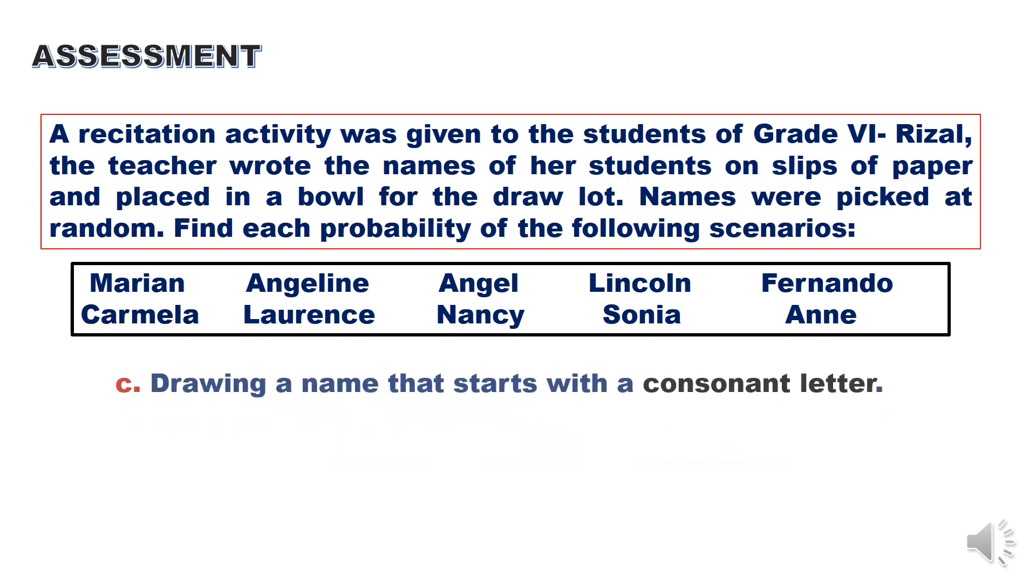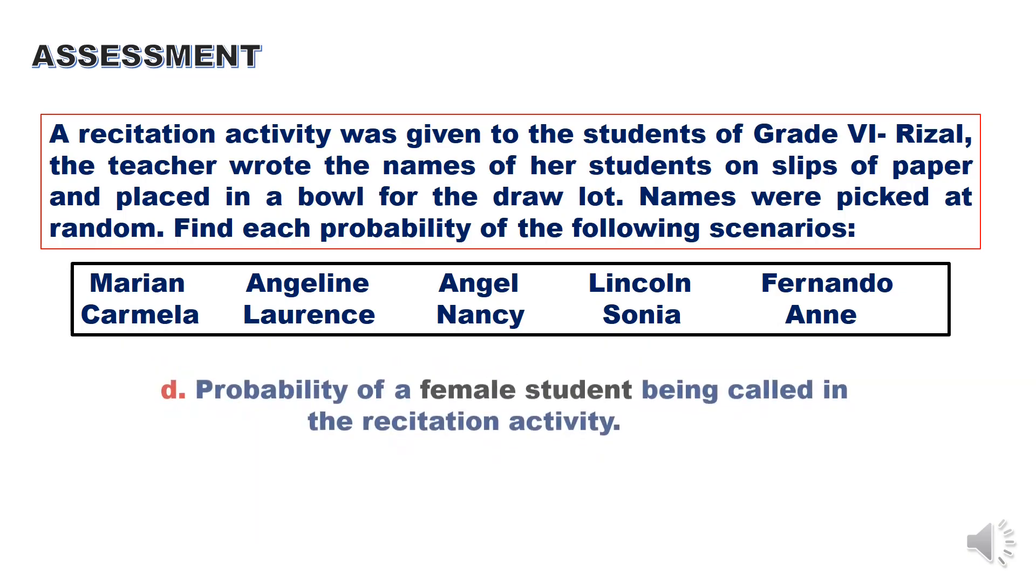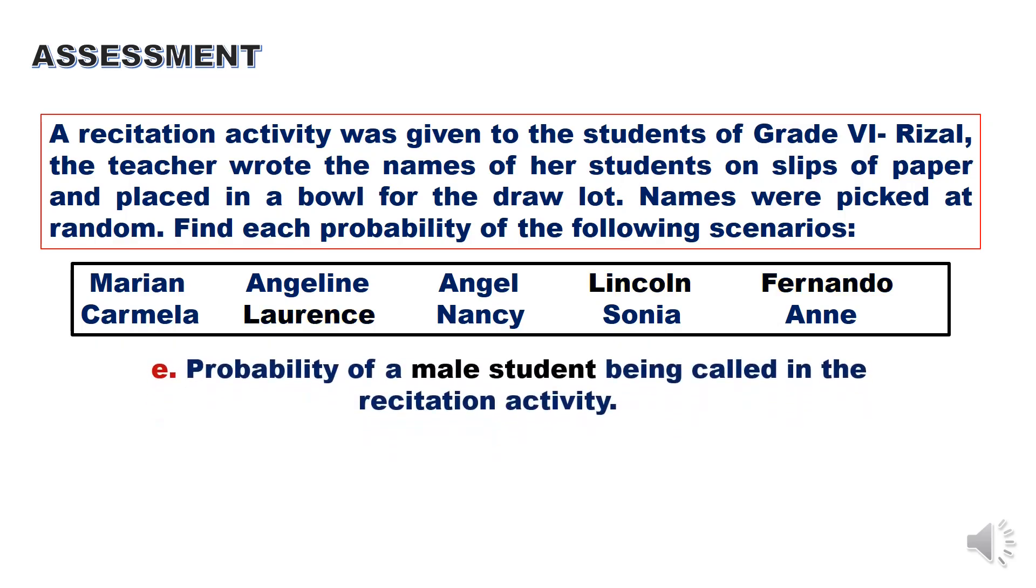Then try to answer this: Drawing a name that starts with a consonant letter. Probability of a female student being called in the recitation activity. And probability of a male student being called in the recitation activity.